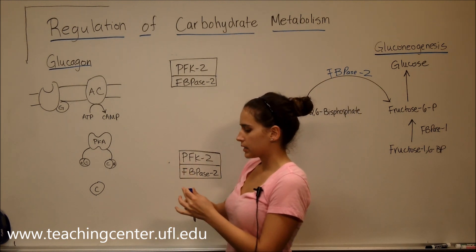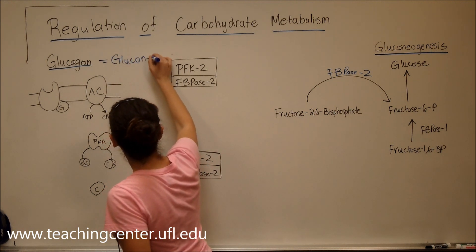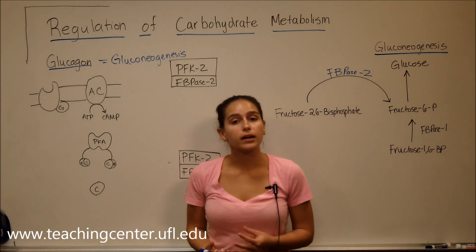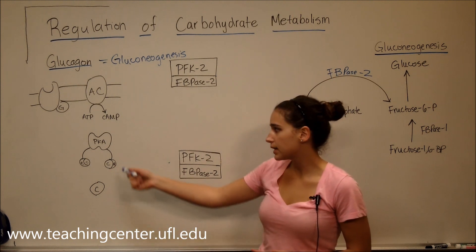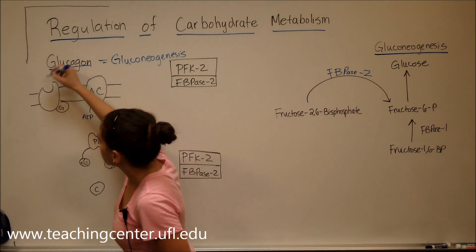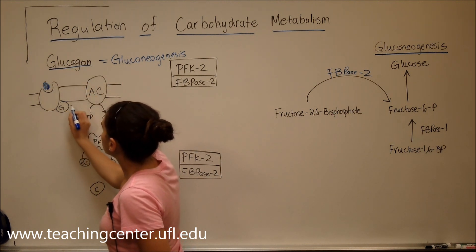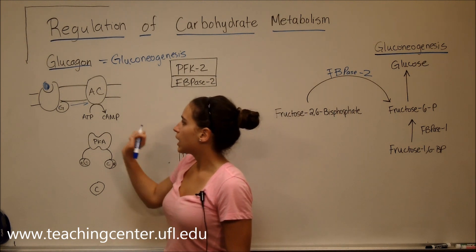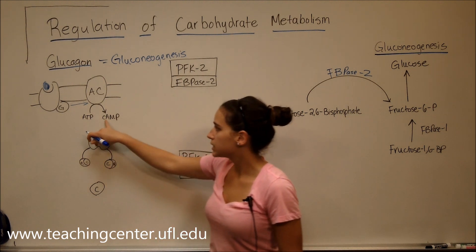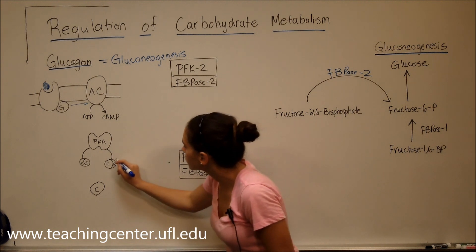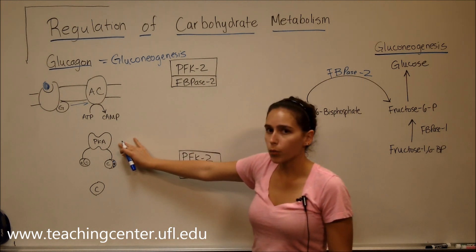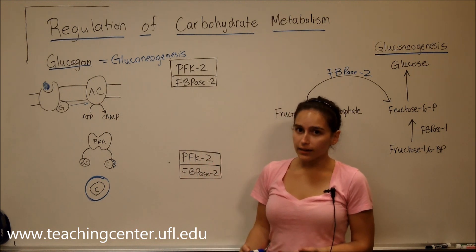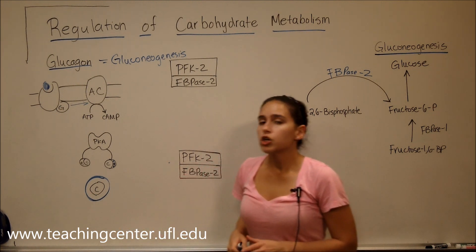Glucagon is going to activate gluconeogenesis — and that's very important. How does it do that? Glucagon activates the G-protein coupled receptor pathway and activates PKA. It binds to the receptor, which moves the G-protein to adenylyl cyclase, activating it. Adenylyl cyclase then converts ATP into cAMP, which binds to the regulatory site of PKA (protein kinase A) and releases the catalytic site. Because PKA is a kinase, it goes on to phosphorylate things.